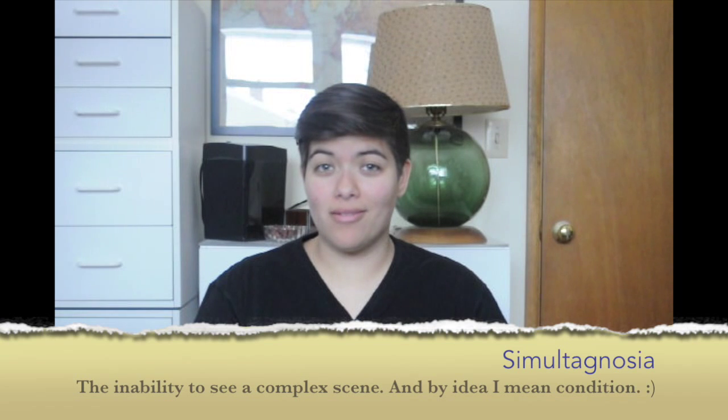The first subcategory under Balint Syndrome is called Simultagnosia. Simultagnosia is basically the idea that one cannot see a complex scene — your vision is very focused. Other people also call it object blindness, because you aren't seeing all of the objects in the room. Normally, you can only focus on one, and a lot of that happens because items overlap.